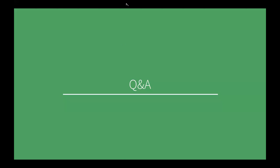Any questions? There's a question asking for the name of the tool used for spell checking. It's called Vale. Just Google 'Vale spell checking' and it'll come up. Our documentation repo on GitHub also has the Vale rules we use listed, so if you're curious about which style checkers we use within Vale, you can look there.